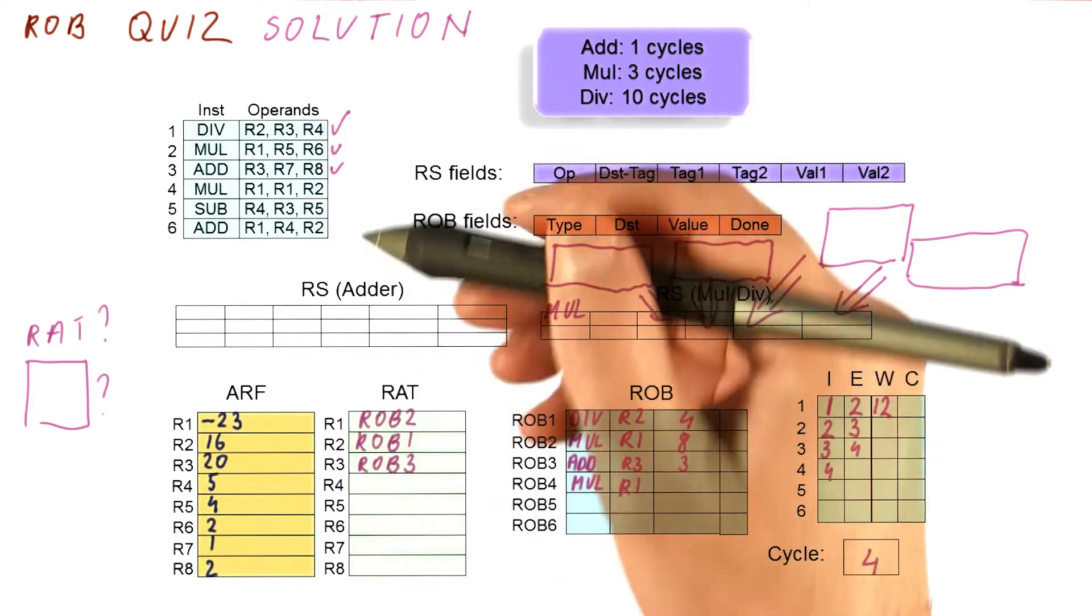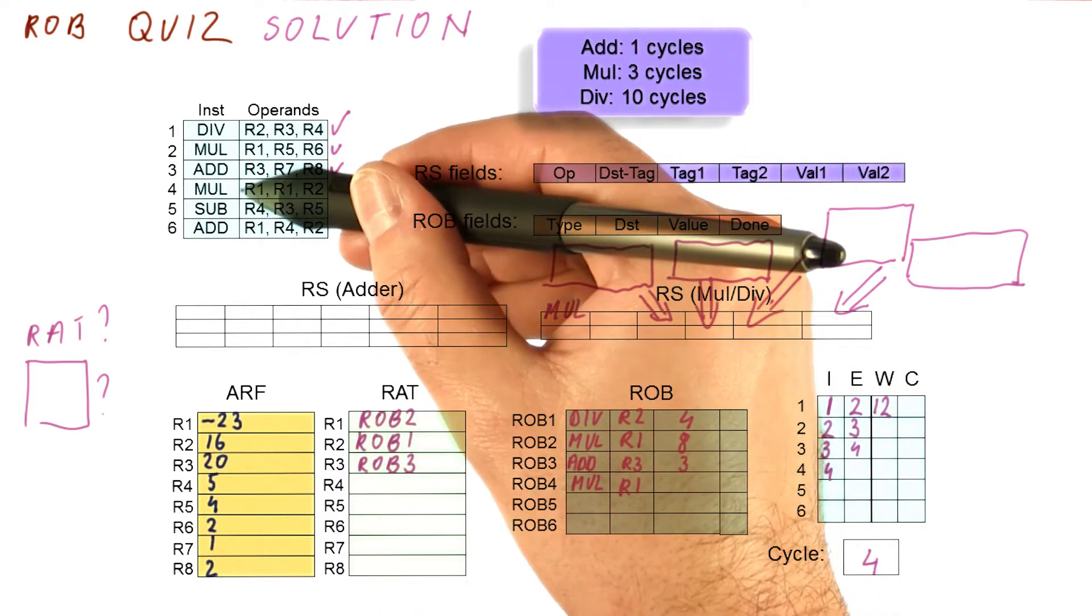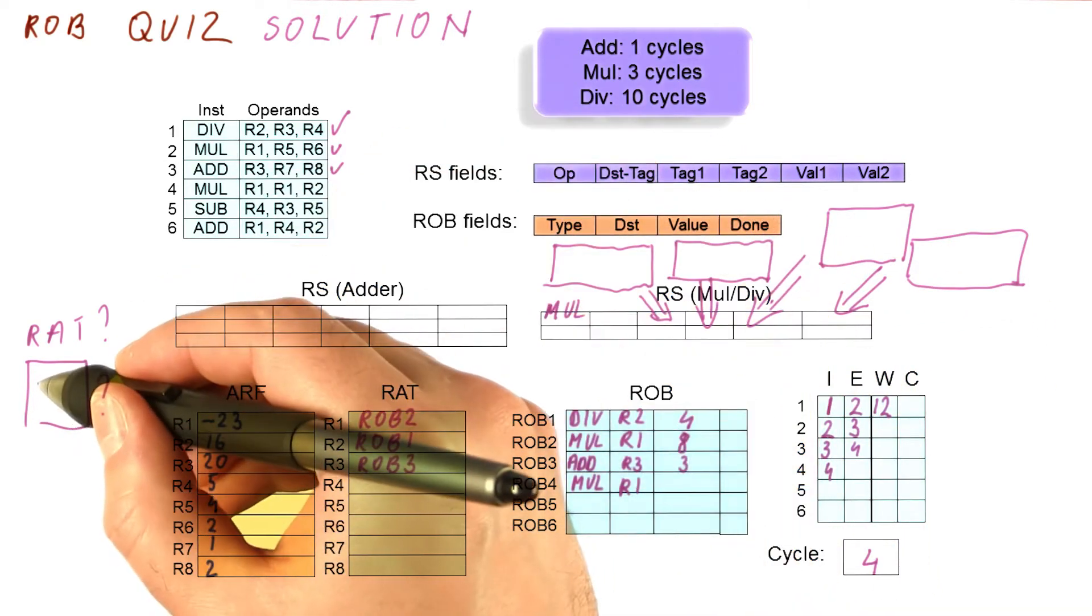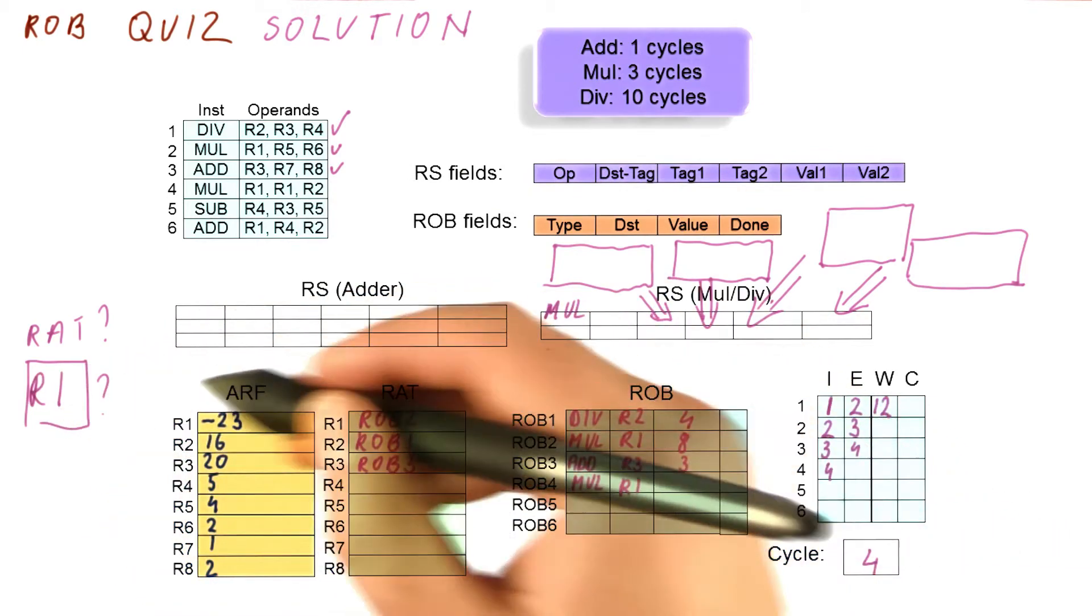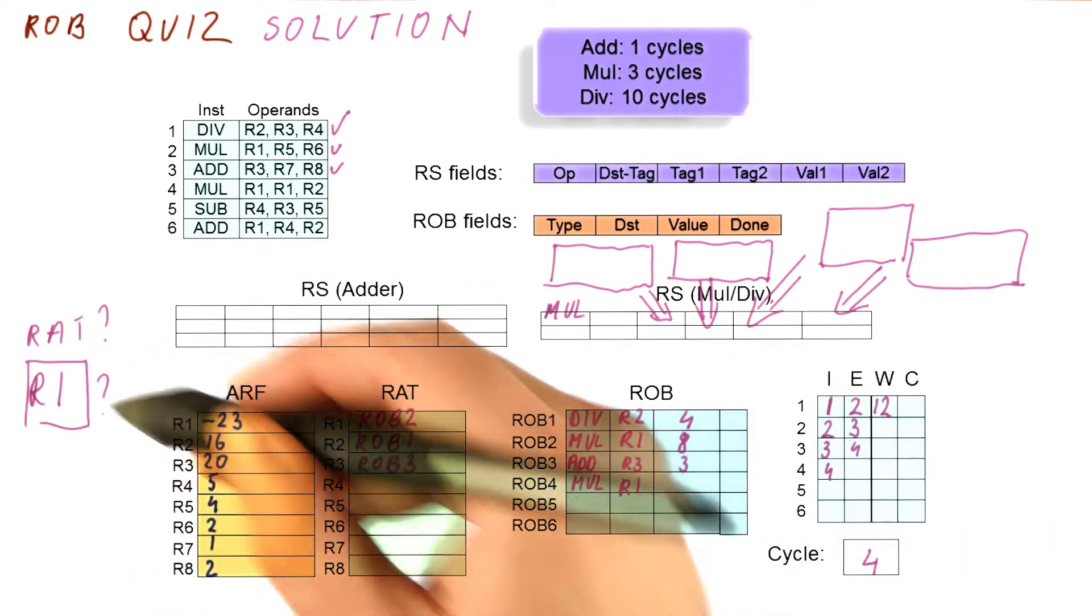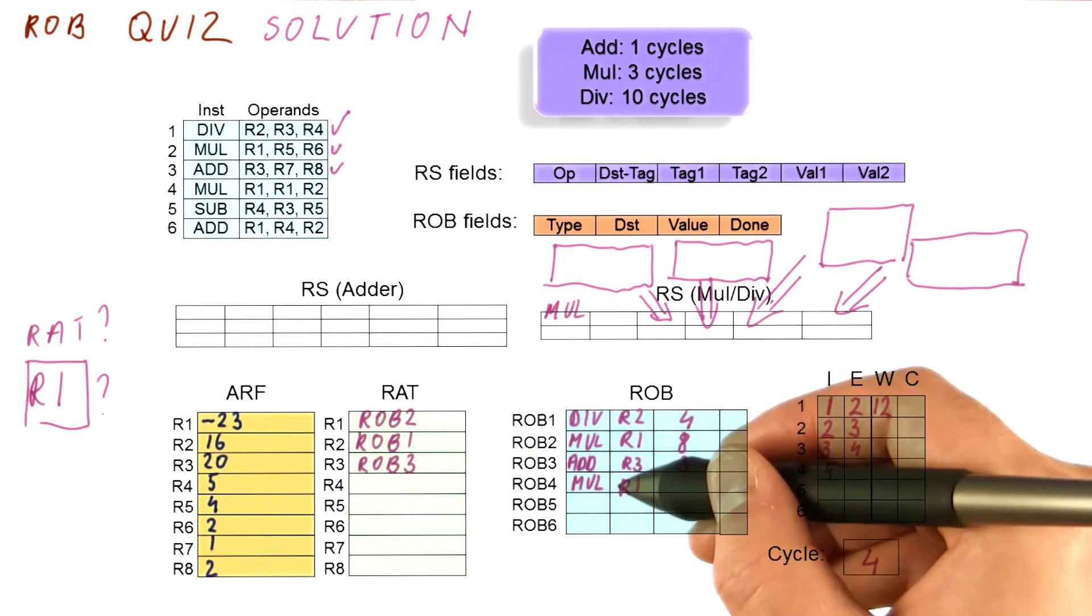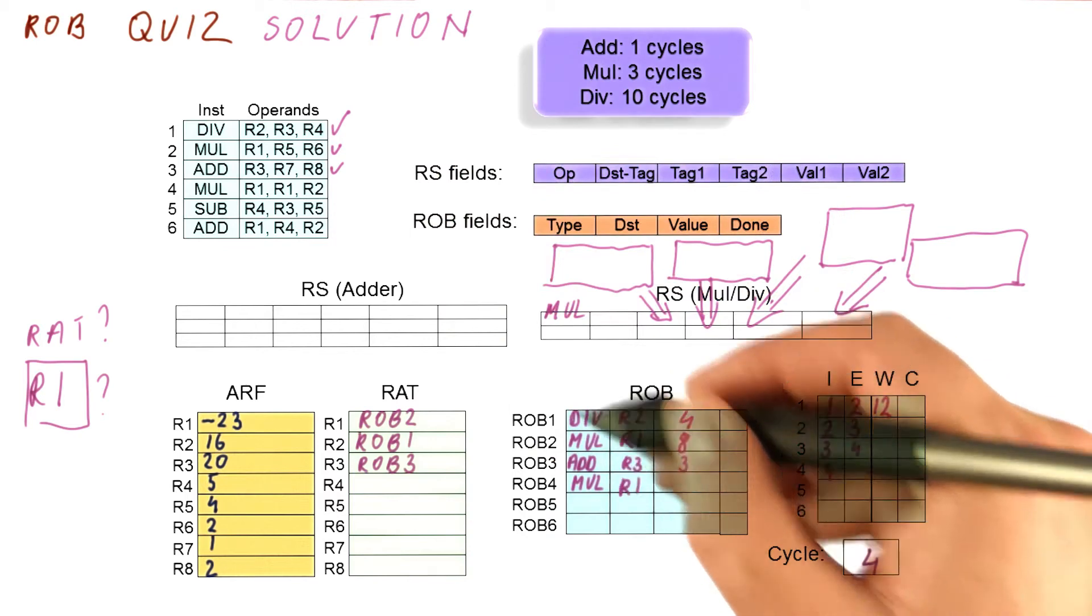The modification of the RAT entry is going to be easy, because it's going to be the RAT entry for R1, so the correct answer here is R1. The RAT entry for R1 is going to be modified, and we modify it with ROB4. Before we do that, however,